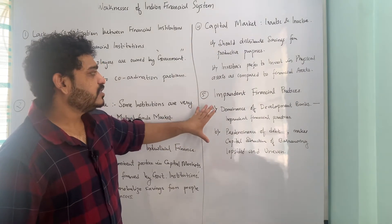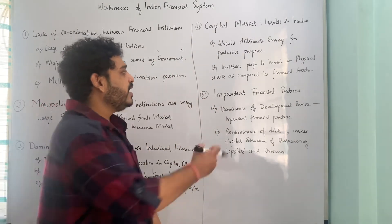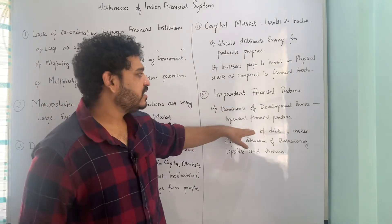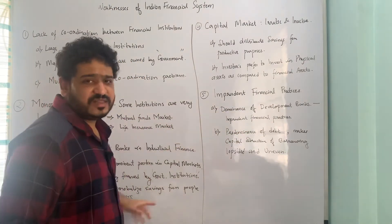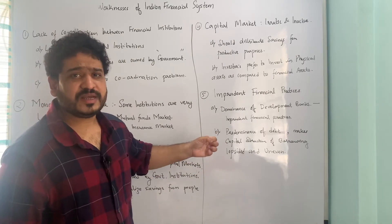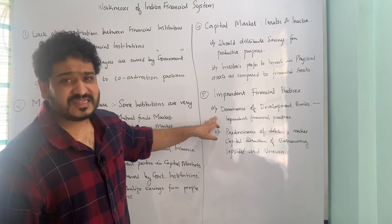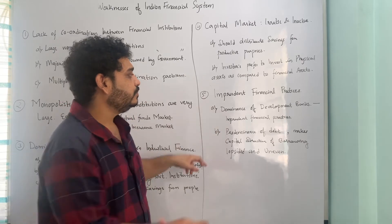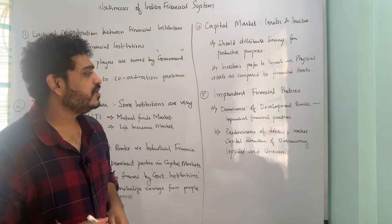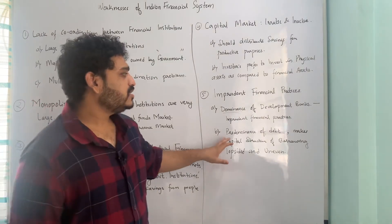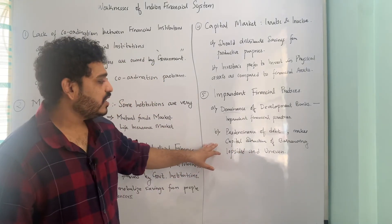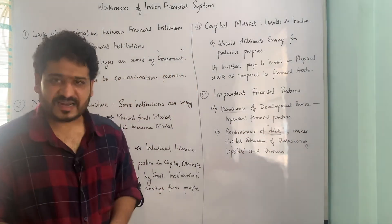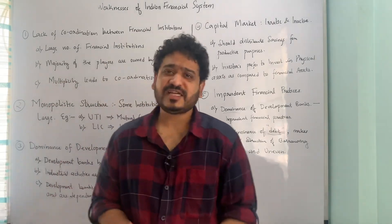The fifth point of weakness is imprudent financial practices. The dominance of development banks leads to imprudent financial practices, as the capital market is entirely dominated by development banks which are majority public sector owned institutions. Moreover, the predominance of debt as an instrument makes the capital structure of borrowing lopsided and uneven. These are some of the key points of weakness or limitation of the Indian financial system.